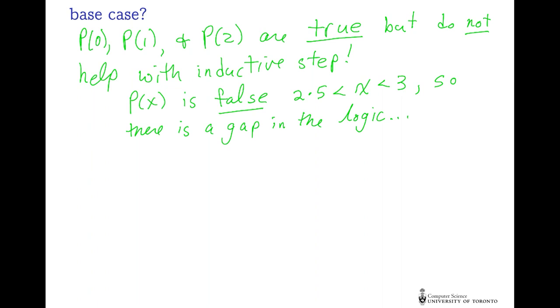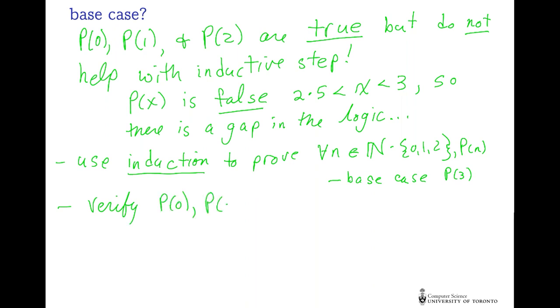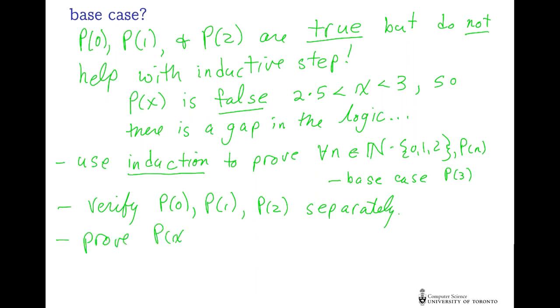Here's what I would suggest. Use induction to prove that for every natural number that is at least 3, P(n) is true. Your base case will be P(3). Separately, you can verify P(0), P(1), P(2). Finally, a separate proof is not too hard to show that P(x) is true whenever x is negative.